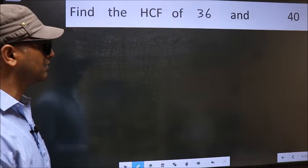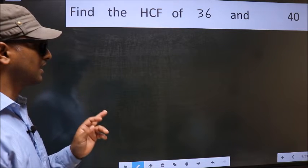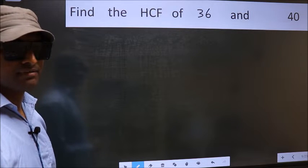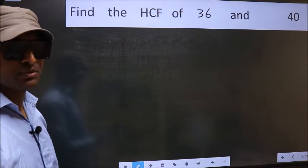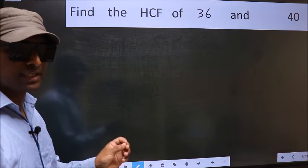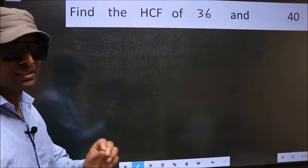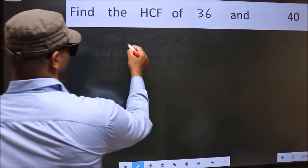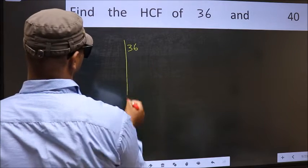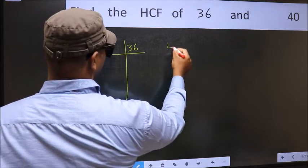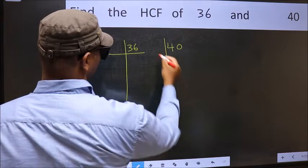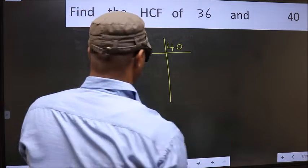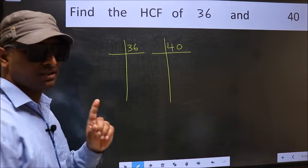Find the HCF of 36 and 40. To find the HCF, we should do the prime factorization of each number separately — that is, 36 and 40. This is step 1.